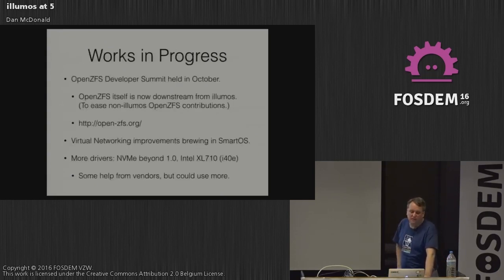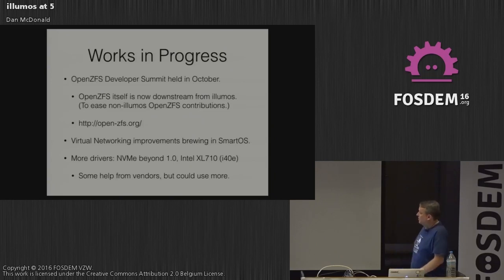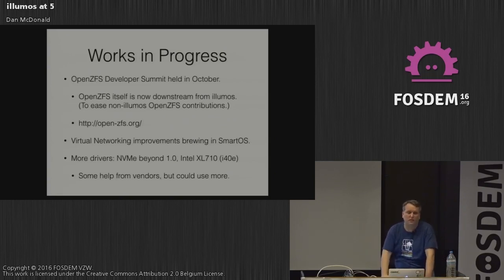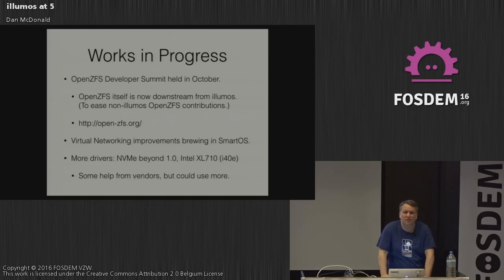The OpenZFS summit is held in October. OpenZFS is now downstream from Illumos and they did that to enable GitHub pull requests from people contributing from other ZFS implementations. They have their own website at openzfs.org. The Joyent people are improving virtual networking since they are basically a cloud provider. We're working on more drivers, NVMe beyond version 1.0, and the Intel 40-gig driver. We get a little help from vendors — the very last slide has an appeal to hardware vendors.